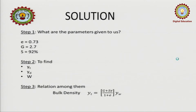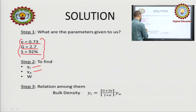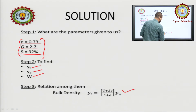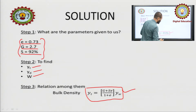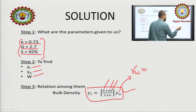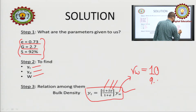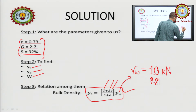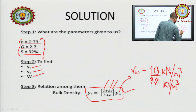Three things are given to us: E, G, and S. We will find gamma T (bulk density), gamma D (dry density), and W (water content). You know that gamma T equals (Gs + S·e) upon (1 + e) multiplied by gamma w. We are already given G, S, e, and gamma w. As mentioned in the last class, gamma w can be taken as 10 or 9.81 kilo Newton per meter cube.